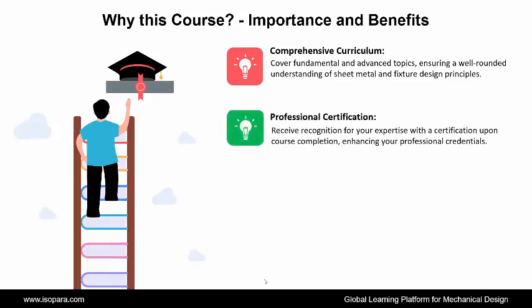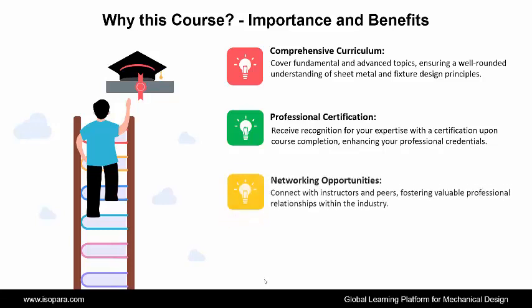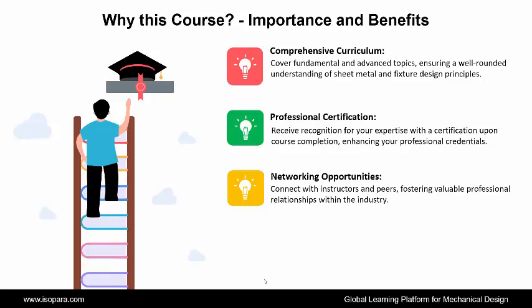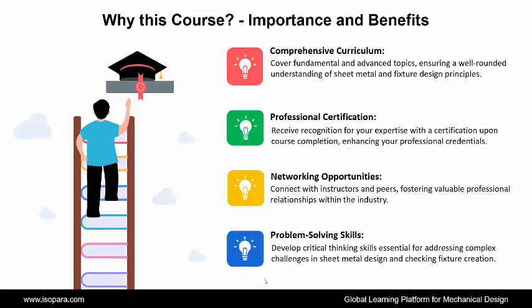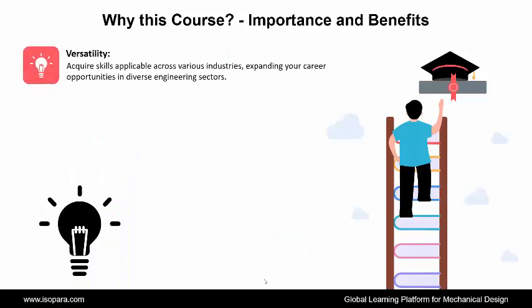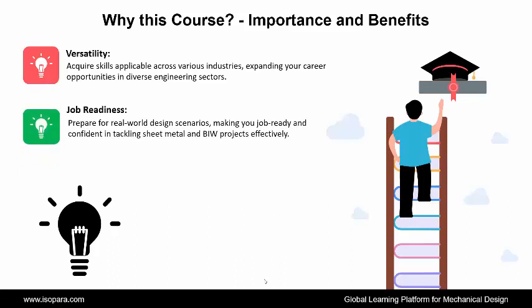Next is Professional Certification — receive recognition for your expertise with a certification upon course completion, enhancing your professional credentials. Next is Networking Opportunities — connect with instructors and peers, fostering valuable professional relationships within the industry. Next is Problem Solving Skills — develop critical thinking skills essential for addressing complex challenges in sheet metal design and checking fixture creation. Next is Versatility — acquire skills applicable across various industries, expanding your career opportunities in diverse engineering sectors. And the last is Job Readiness — prepare for real-world design scenarios, making you job-ready and confident in tackling sheet metal and BIW projects effectively.